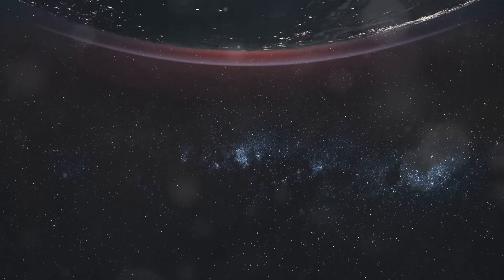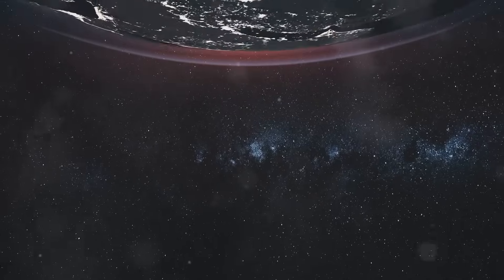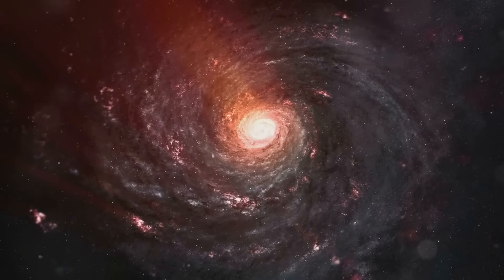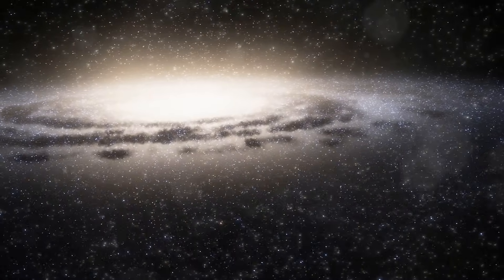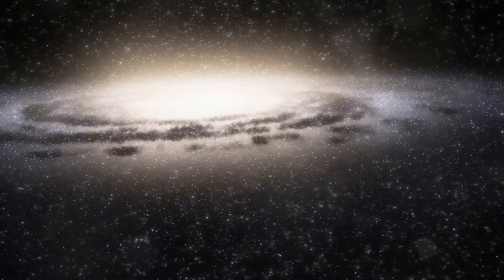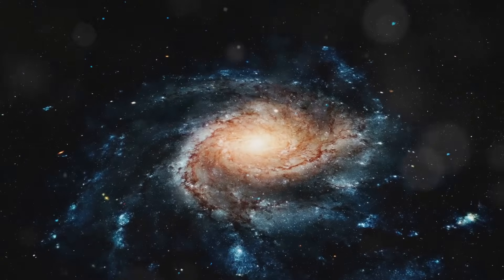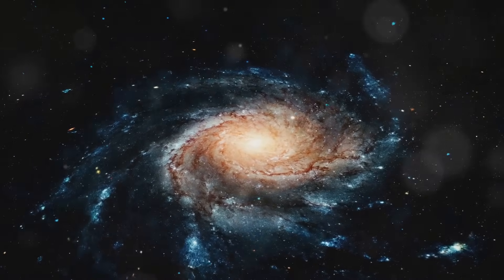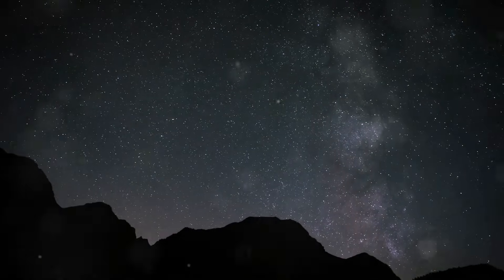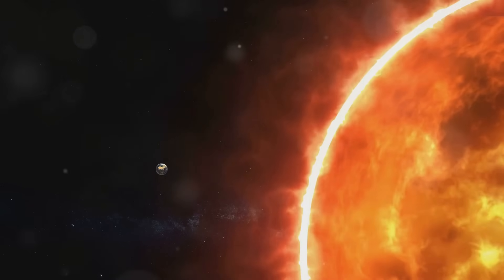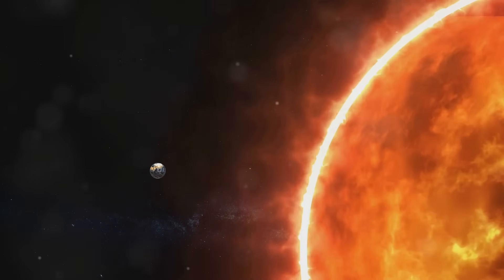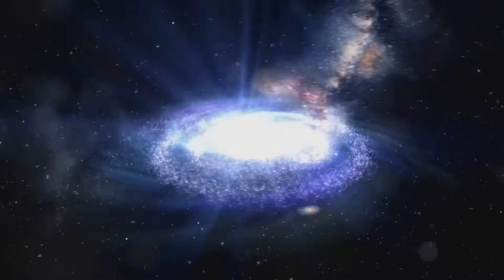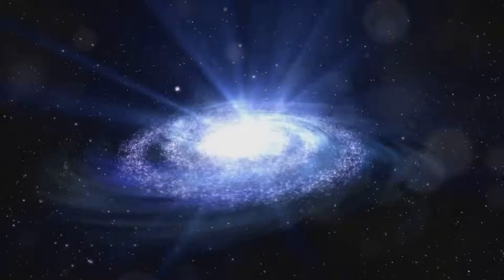Our solar system resides on the Orion Arm, nestled between larger spiral structures like Sagittarius and Perseus. We're perched about 26,000 light-years from the galactic center, orbiting its core in a majestic journey lasting 230 million years per cycle. Despite being an ordinary star system in a colossal galaxy, the Sun guarantees that Earth's position plays a significant role in fostering life by offering a stable cosmic neighborhood away from tumultuous galactic centers.